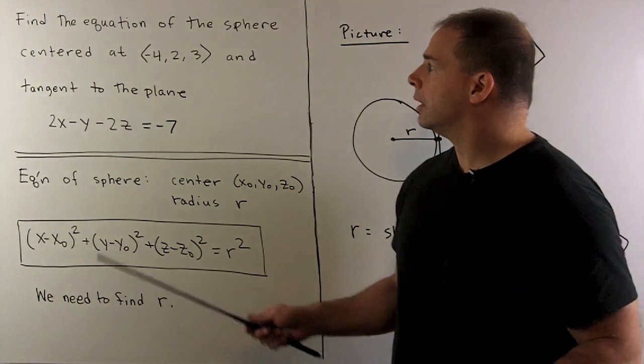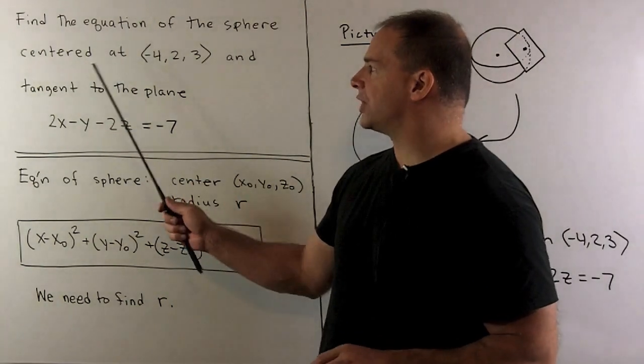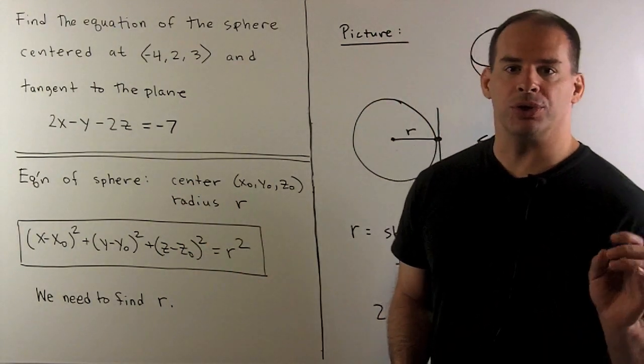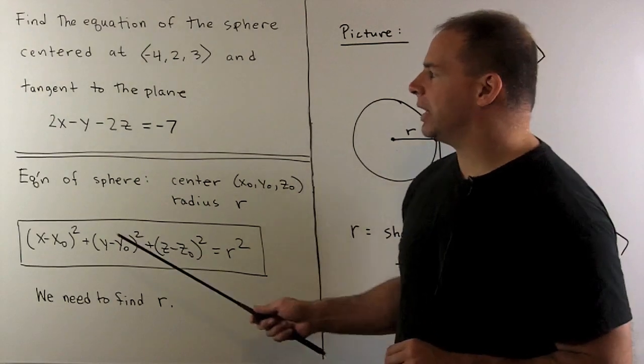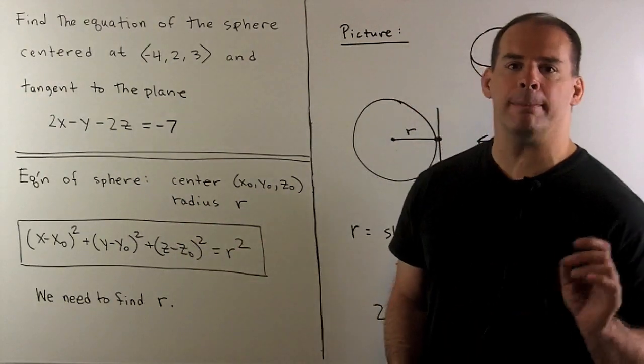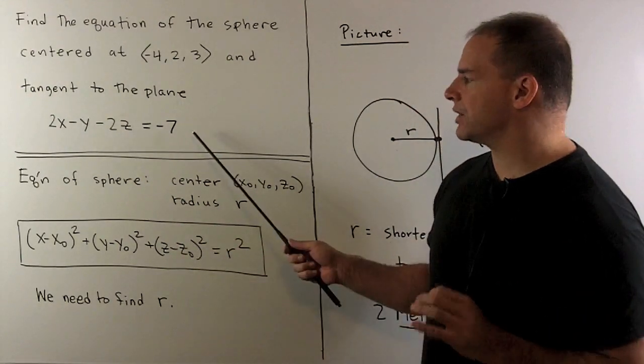Let's look at the problem: find the equation of the sphere centered at the point (-4, 2, 3) and tangent to the plane 2x - y - 2z = -7.